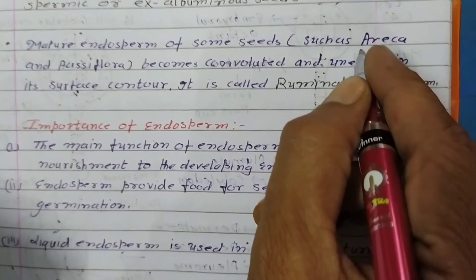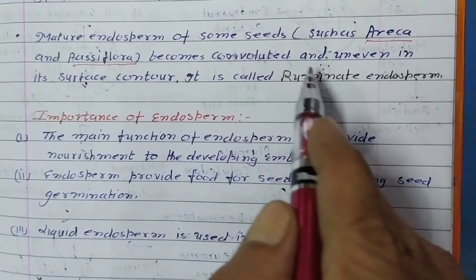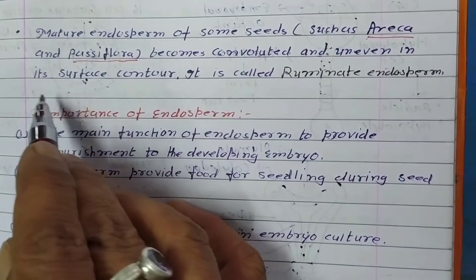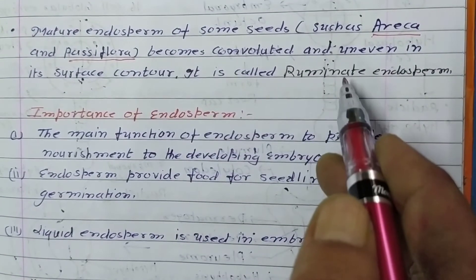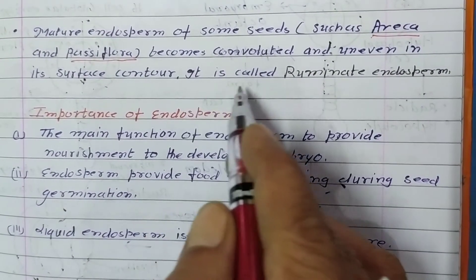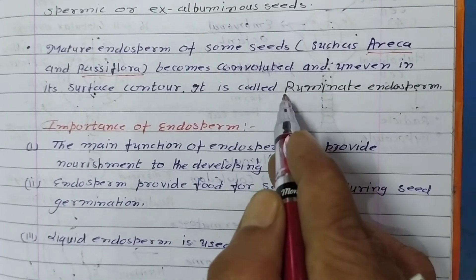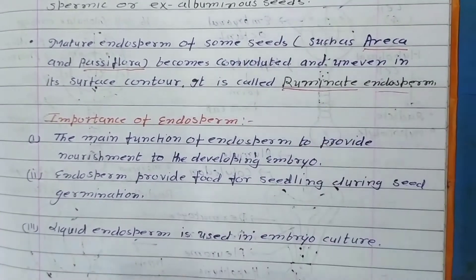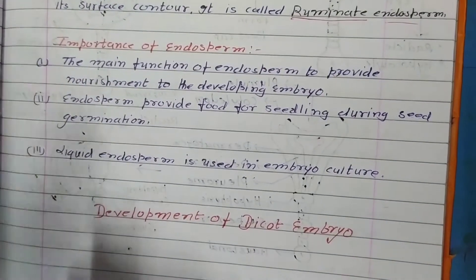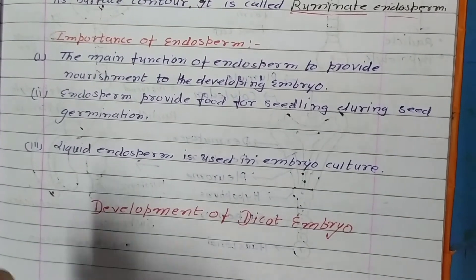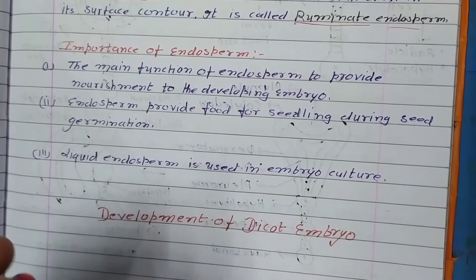The mature endosperm of some seeds, such as Erica and Passiflora, becomes convoluted and uneven on its surface. This is called ruminate endosperm.